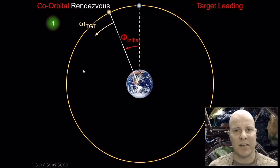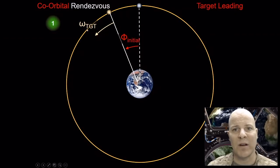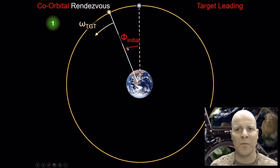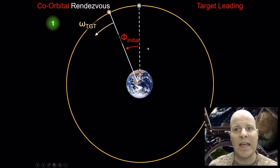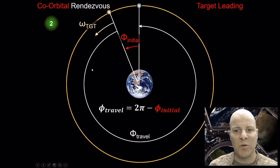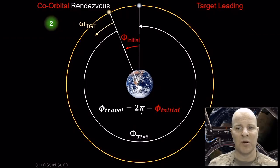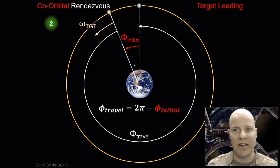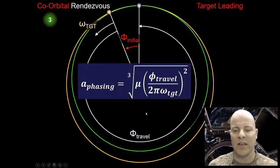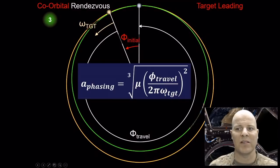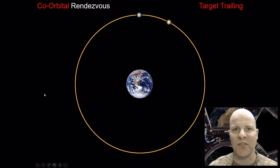To figure out how big the phasing orbit needs to be, we have three steps. First, calculate omega target using the same angular velocity equation. Phi initial is given — measured from interceptor to target in the direction of spacecraft motion. Next, calculate phi travel, which equals 2π minus phi initial (360 degrees minus the initial angle). Finally, the phasing orbit semi-major axis is: a_phasing = cube root of [μ × phi_travel / (2π × ω_target)²].